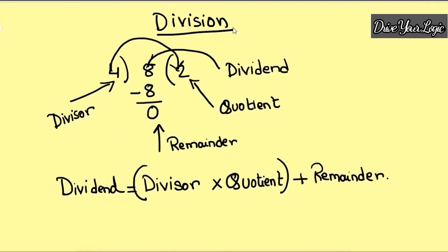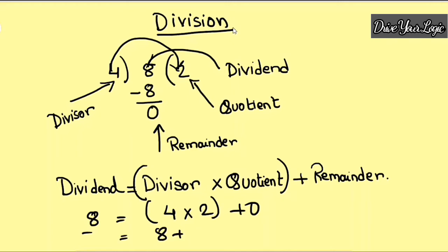For this example, if I want to check: my dividend is 8, divisor is 4. So 4 into 2 plus 0 — you have to see if both sides are equal. Yes, it's equal: 4 into 2 is 8, and 8 plus 0 equals 8. Yes, they are equal, which means your answer is correct.